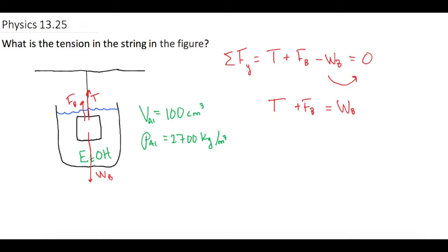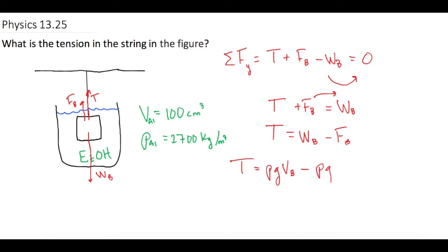So now they want to know what is the tension in the figure. Let's subtract over the buoyant force, so we get the weight minus the buoyant force equals tension. Now let's substitute in the values — or the equations rather — for weight and for buoyant force. So T is equal to rho times gravity times the volume of the block, minus rho times gravity times the volume of the liquid displaced.